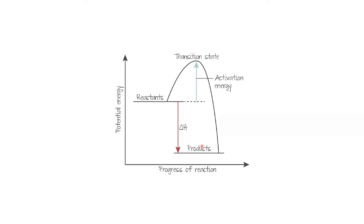In an exothermic process, the energy state finally reached is lower than where it started. If it were an endothermic reaction, it would end at a state higher than the previous one. In either case, energy must be absorbed so that bonds are broken, and energy is released when new bonds are made. How much energy is absorbed compared to how much is released determines if it is exothermic or endothermic. If more is absorbed and less is released, that is endothermic; if more is released and less is absorbed, that is exothermic.